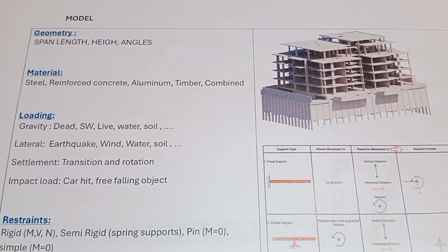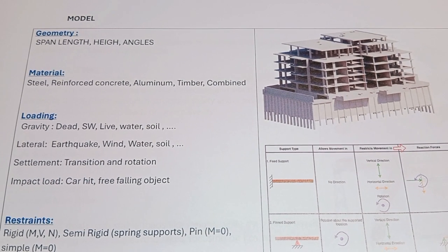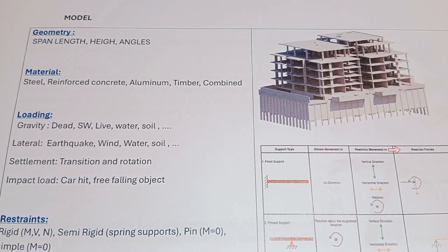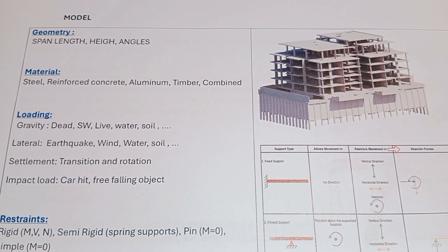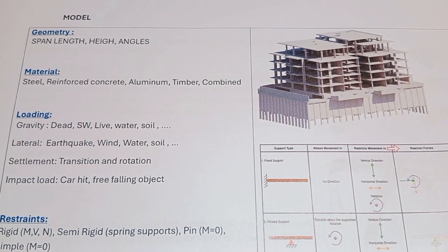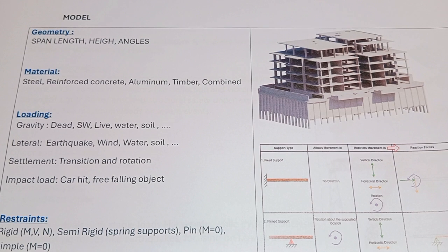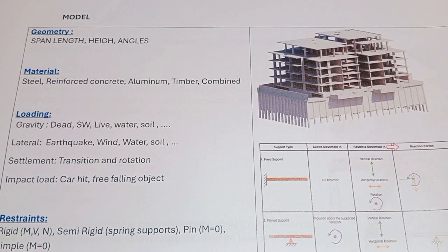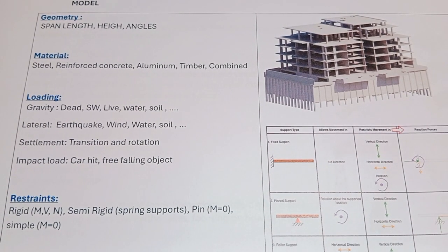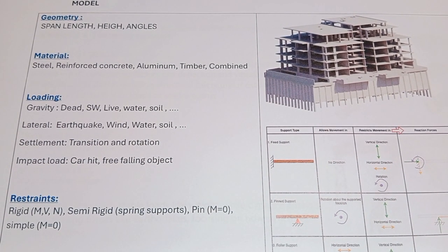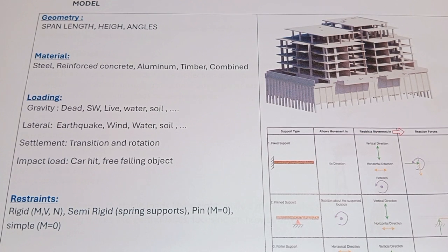For material, we need to know what type of material is used in the structure — whether it is steel, reinforced concrete, aluminium, timber, or a combination. For example, some parts may be steel columns and some parts may be concrete flooring. We can use all these combinations in our structure.